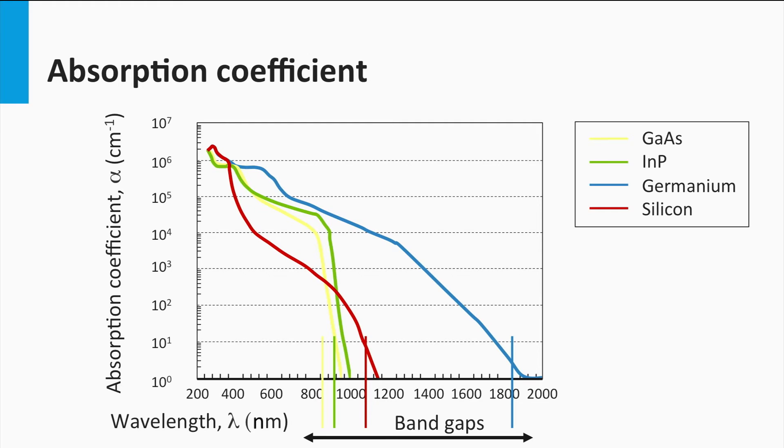Materials with an indirect band gap, like silicon and germanium, have smaller absorption coefficients. Only in the very blue part, below 400 nm, silicon has a direct band gap transition. Silicon is a relatively poor absorber and therefore thicker absorber layers are required, in reference to gallium arsenide, to absorb the same fraction of light.